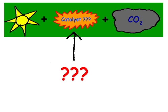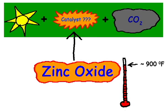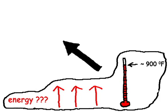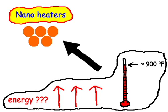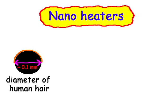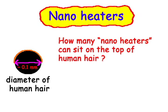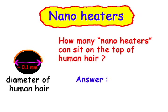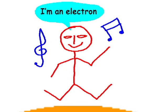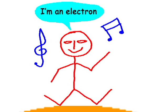Zinc oxide is a good catalyst for carbon dioxide conversion at higher temperatures. Therefore, we have to increase the temperature of zinc oxide. We are introducing nano heaters to increase the temperature of zinc oxide. Nano heaters are tiny particles that cannot be seen by the naked eye. Our nano heaters are gold nanoparticles.